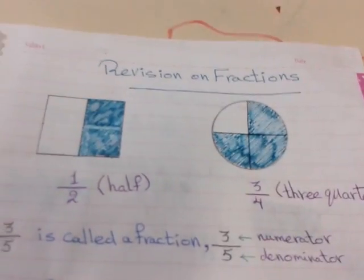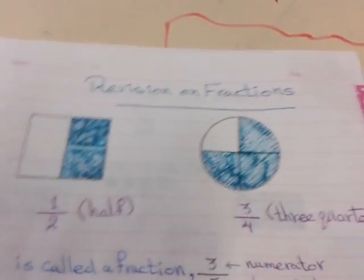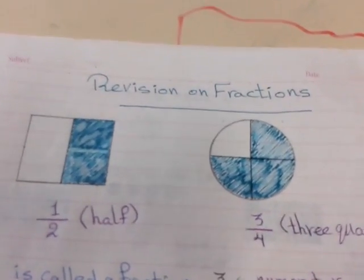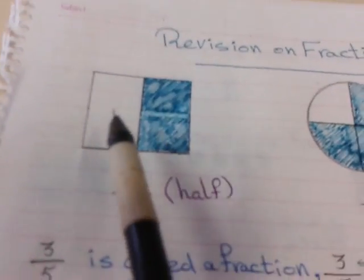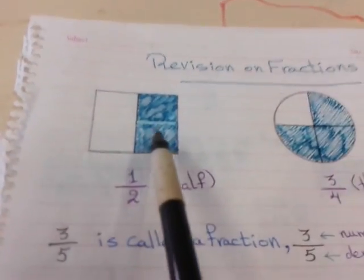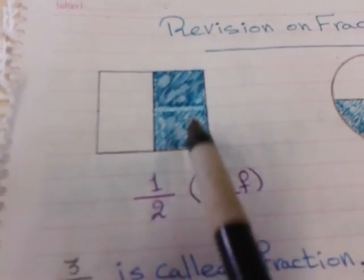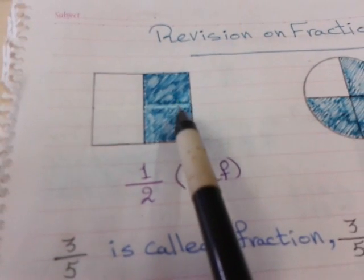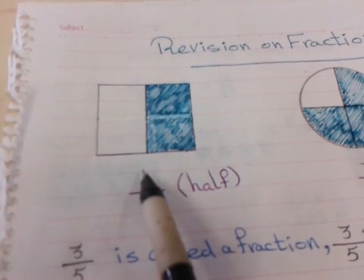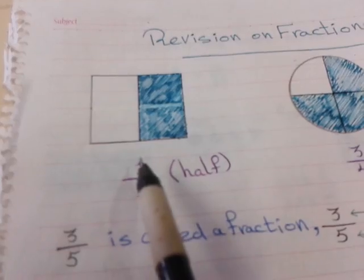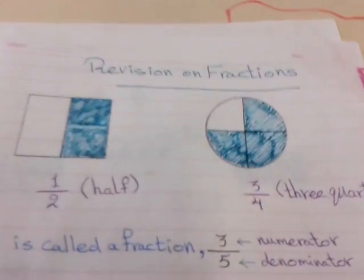The first lesson on Primary 4 second term is called Revision on Fractions. How can we write fractions? Here we have a square. How many parts in the whole shape? 1, 2. So we will write 2 down. How many colored parts here? 1. So we will write 1 up. 1 over 2 is called half.